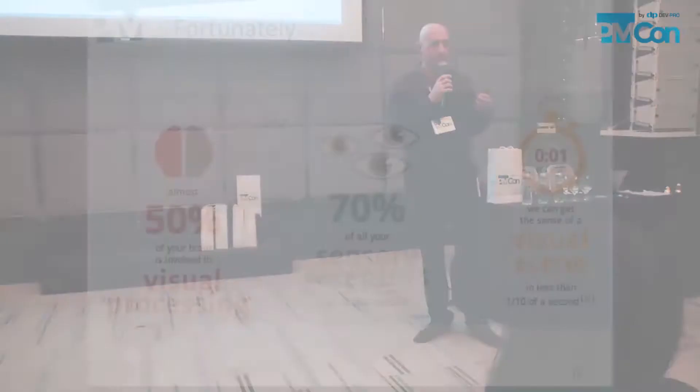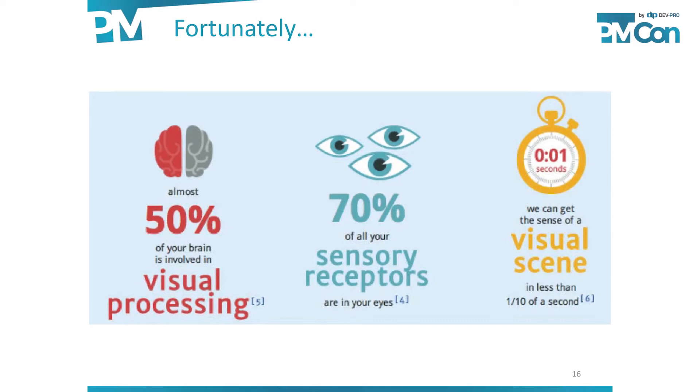We also process a lot of information, and there's a lot of confusion. Fortunately, we're pretty adaptable as people. Almost 50 percent of our brain is involved in visual processing — no other sensory function uses that much brain power. Seventy percent of all sensory receptors are in our eyes, and none of our senses process information faster than our visual sense.